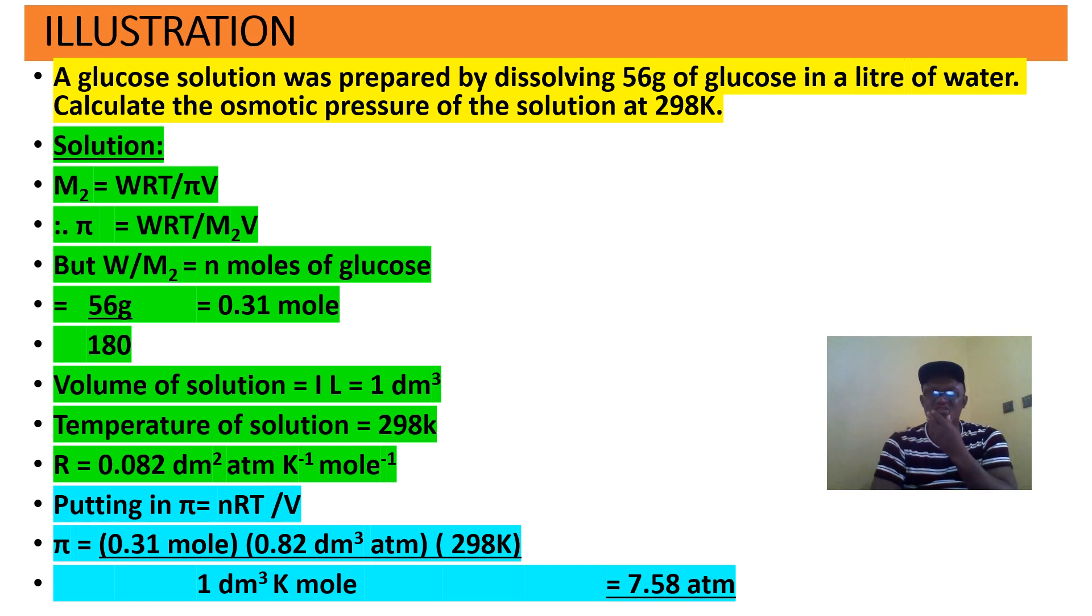Illustration. A glucose solution was prepared by dissolving 56 grams of glucose in a liter of water. Calculate osmotic pressure of the solution at 298 K. We use that equation M2 is equal to WRT divided by pi V. Osmotic pressure we're looking for is pi, which is equal to that. Now first, we'll get the number of moles, 56 over 180, that is the molecular weight. 56 is the grams of glucose, and 180 is the molecular weight of glucose.